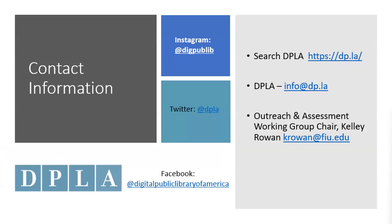I'll leave my contact information up on this final screen, and if there are any questions I'll be glad to take them. One question that came in was about example five: are those emancipation petitions also included on the Digital Library of American Slavery, and if so, are they different? I don't know the answer to that — I only know what I was able to find through DPLA and the example I gave. I'm not sure if they're on the other digital library on American slavery or not; you would have to investigate that.